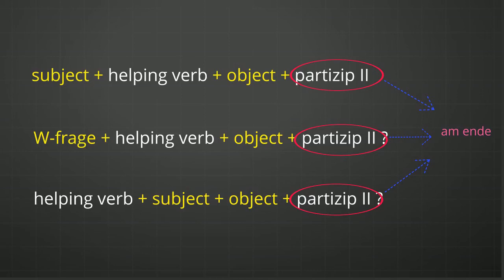If you are writing a yes/no question, then the first position will be the helping verb — either Haben or Sein verb in conjugated form. Then after that, you write the subject. Followed by the subject, if you have an object you can write it, and then at the end of the sentence you write the Partizip II form of the verb. So here you can observe that whether it is a normal sentence, a W-Frage, or a yes/no question, the Partizip II form of the verb will always be at the end.